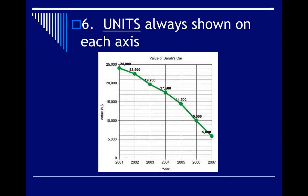Rule number six is an easy one. Units are always shown on each axis. So, we always want to not only have what the independent and dependent variable is, but the unit as well. So, this one's really easy because it's just year. So, that's, you know, there's nothing extra to add here. And here is the value, but it's in dollars.